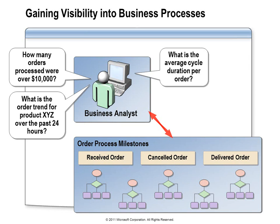and then we instructed any of the components that complete the processing of an order to report the completion time, we could rely on BAM to calculate the duration of each order process, and query for the average, maximum, or minimum duration. If we instructed a component to report the product IDs included in every order, we could query BAM to find how many times a given product has been ordered in a specific time period, such as the last 24 hours. We can also define milestones — seeing how many orders have been received but are waiting, how many have been canceled, how many have been delivered, and even the average duration for orders for a given product delivered in the past 24 hours.